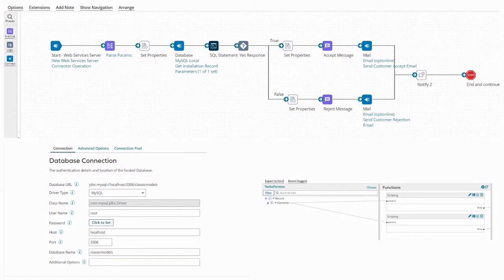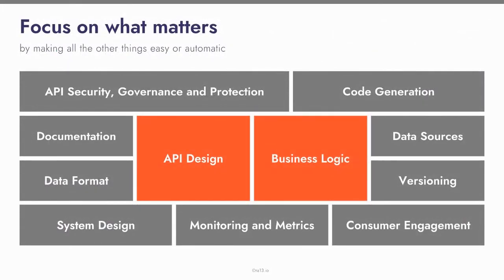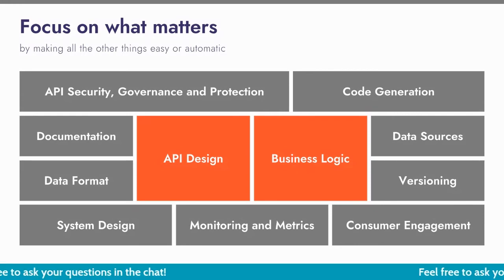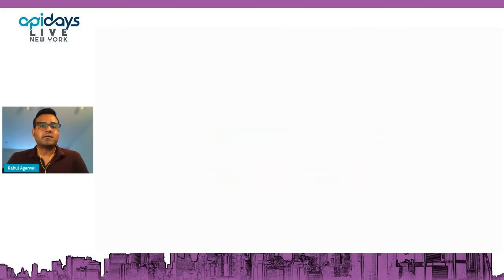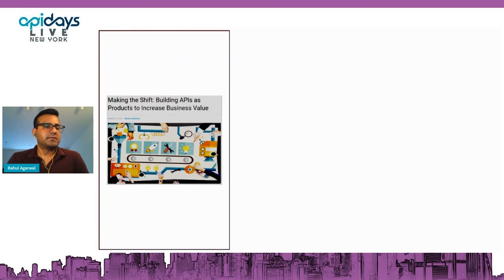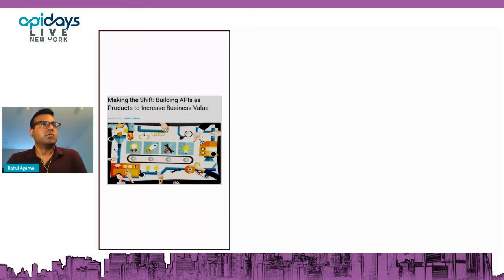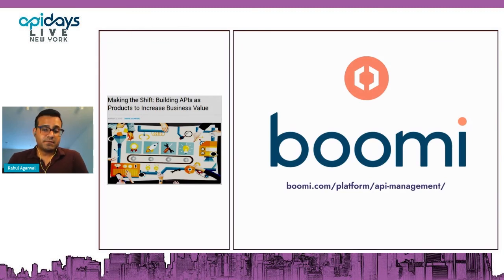To summarize: think about API design and business logic, and start looking for tools and frameworks to make your life easier. Focus on design and logic; leave the rest to tools and platforms like Boomi. I've shared a blog post on building APIs as products — you can find it on the Boomi blog. You can also check out the product itself at the provided link to see how you can be more productive.